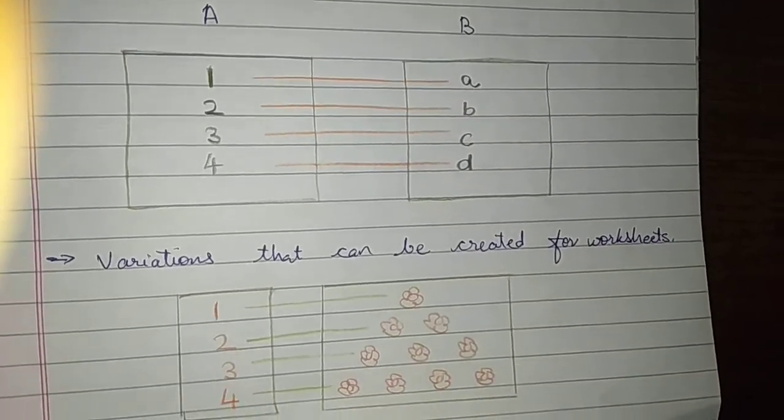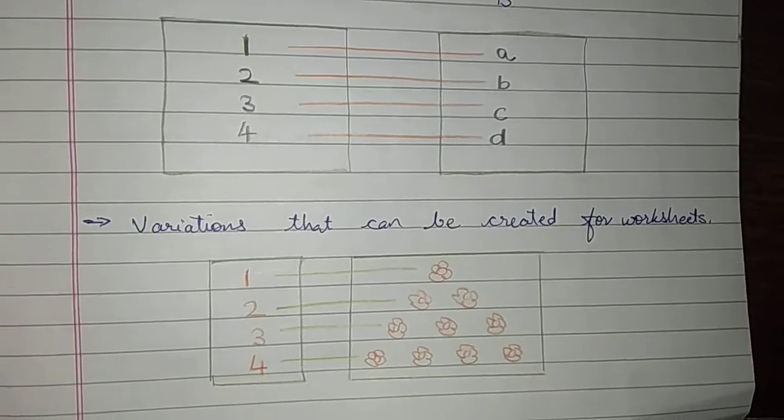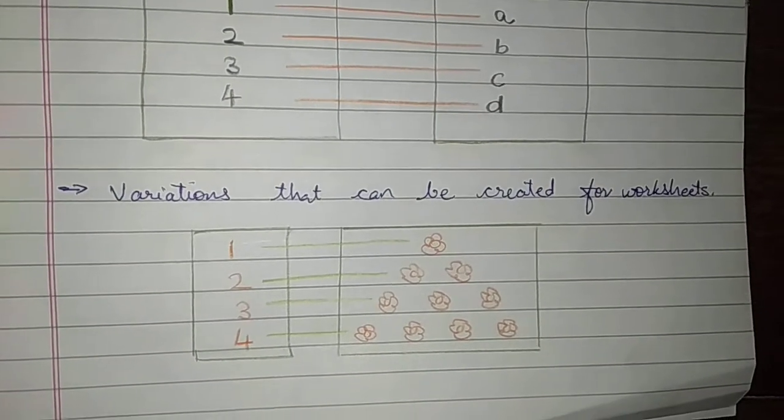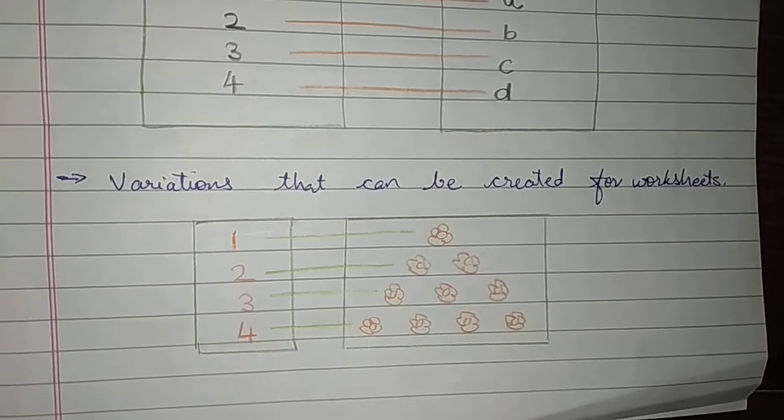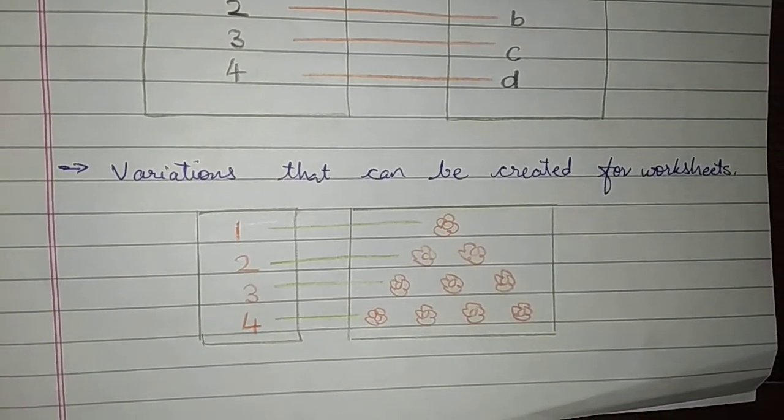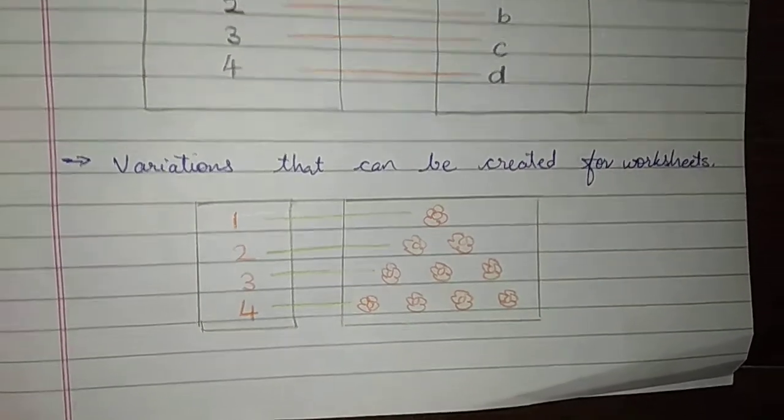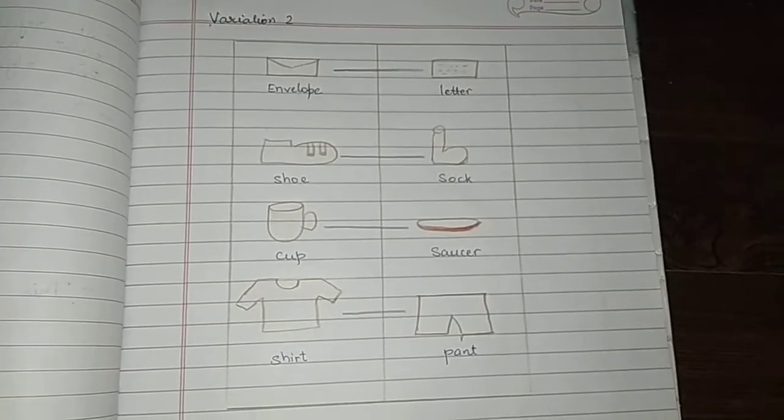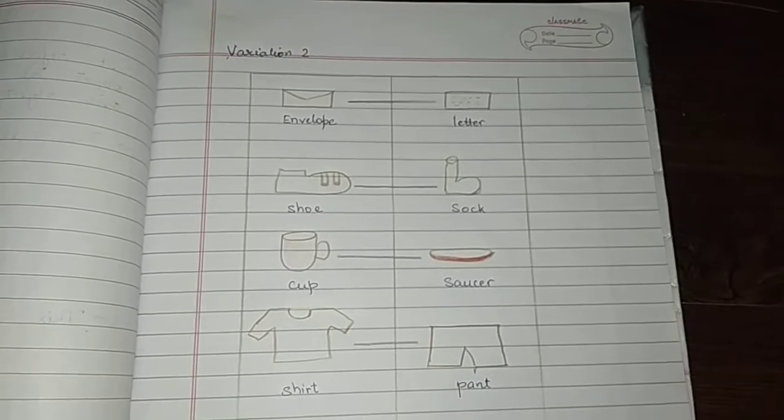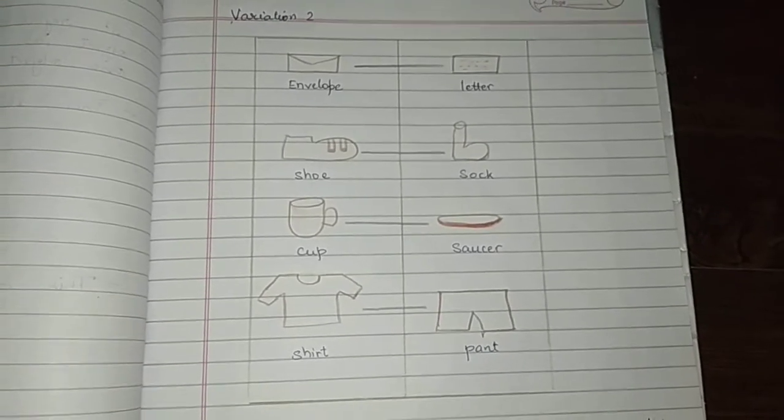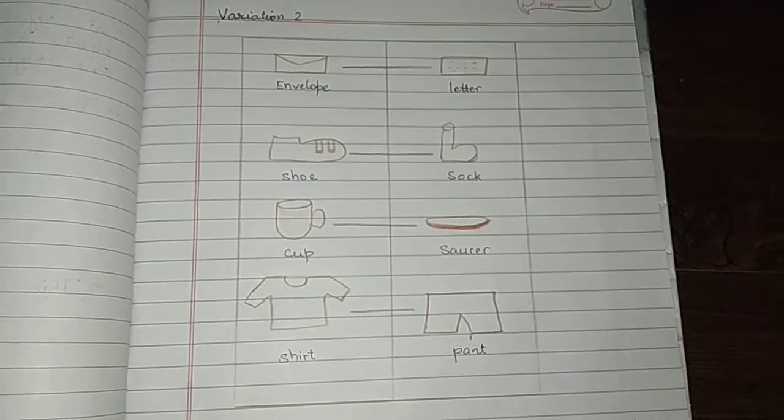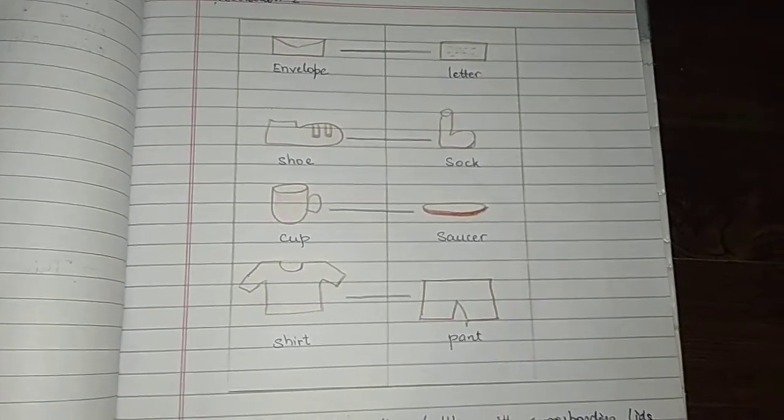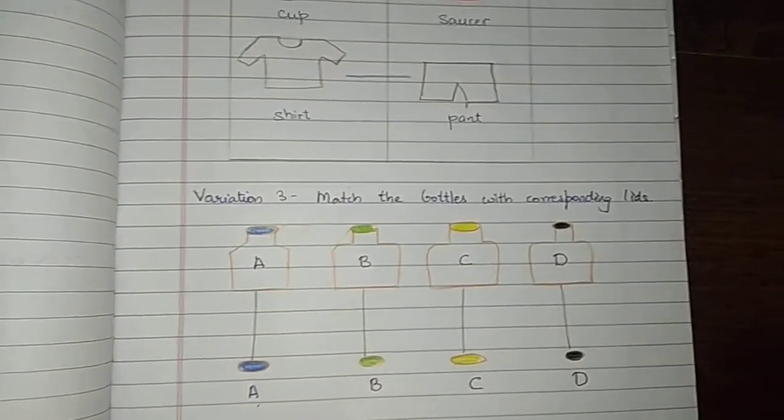Now, we will be talking about different variations that can be created for worksheets. Variation 1: the first set we write the numbers and the second set we create the objects and place them in horizontal manner. The second variation can be the diagrams or the objects which are corresponding and relating to each other, placed in vertical manner, and the child can be asked to draw horizontal lines. The third variation can be similar items with different lids.